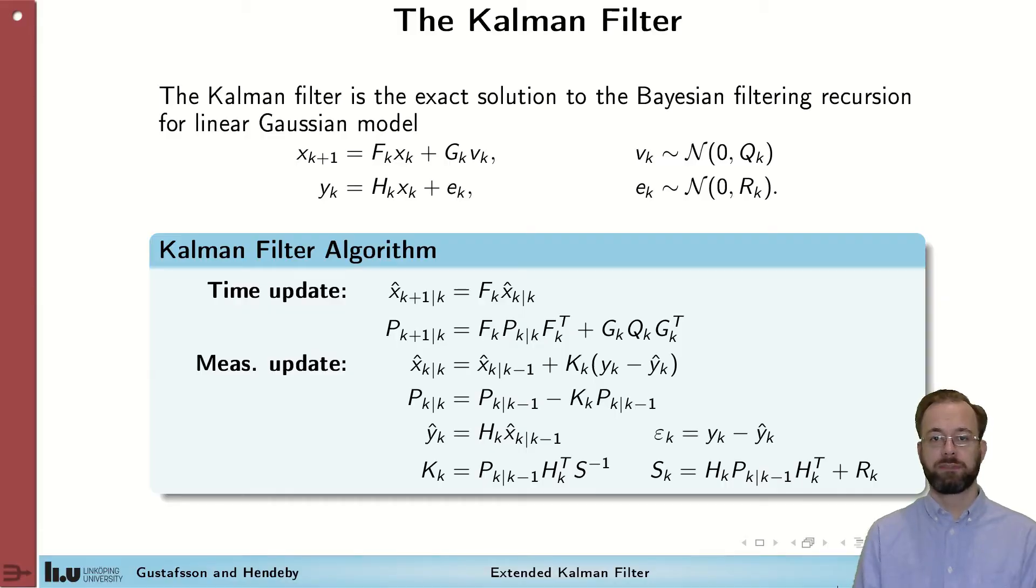We start by revisiting the results from the Kalman filter module. The Kalman filter is a linear filter that applies to linear models of this kind, so the next state is a linear combination of the current one plus some process noise, and we have measurements that are linear combinations of the state plus some measurement noise.